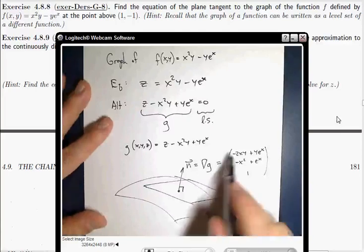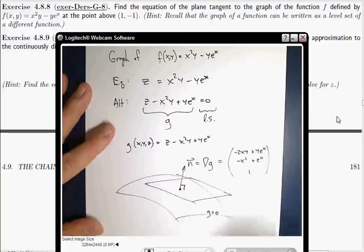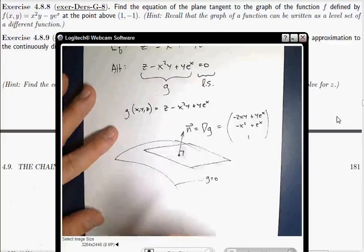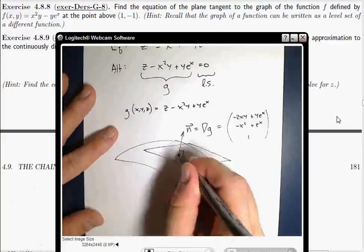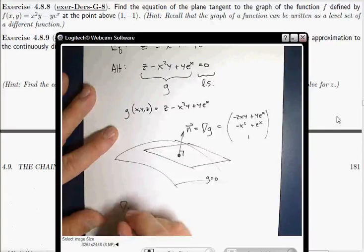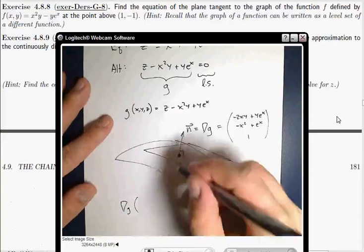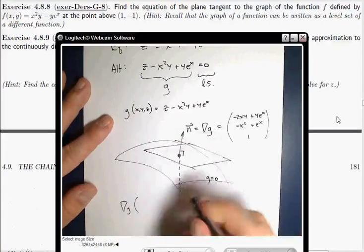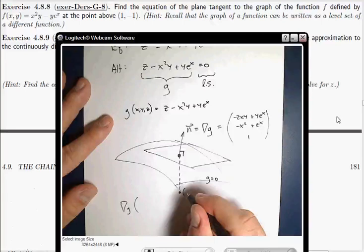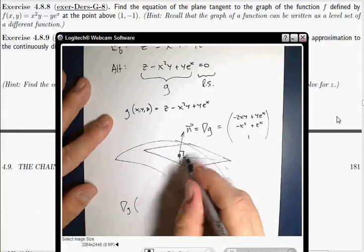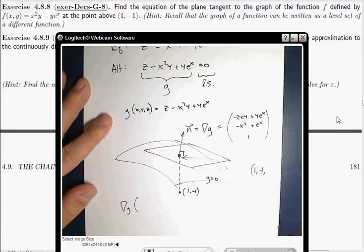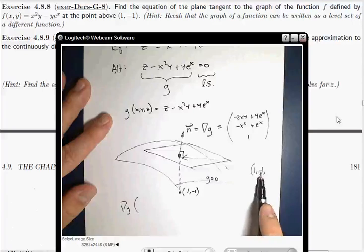So this is a general formula for my gradient. That means the gradient, of course, I really only want to compute the gradient at that point. So the gradient of g at the point in question. Let's see, now we've got to be careful. We're looking above the point (1, negative 1). That means that this point here is (1, negative 1), and now I've got to figure out what's the value of z that corresponds to this x and this y.